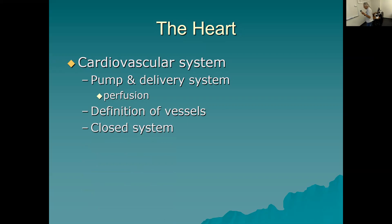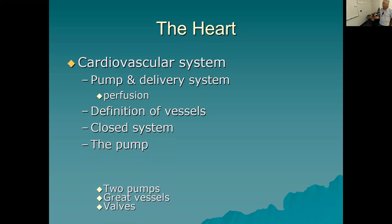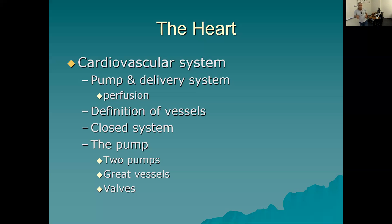The cardiovascular system is divided into two circulations: the pulmonary circulation and the systemic circulation. They are connected to each other, so this is called a closed system. The pump is the heart — it's actually two pumps: one on the right side and one on the left. The right pump sends blood to the lungs only, and then blood returning from the lungs goes to the left side of the heart. The left side pumps blood to the whole rest of the body.